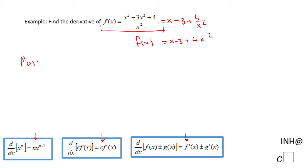which is going to be the derivative with respect to x of x, minus the derivative with respect to x of 3, plus the derivative with respect to x of 4 times x^(-2). So I use the sum and subtraction rule.